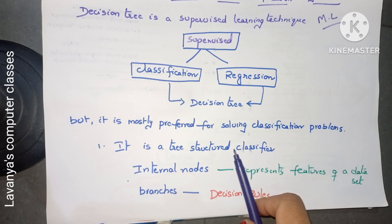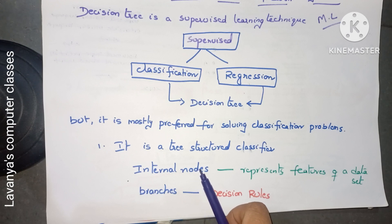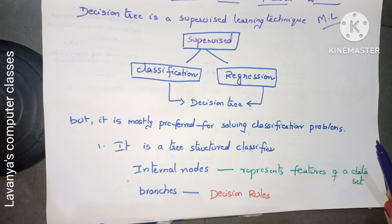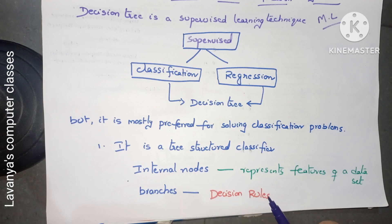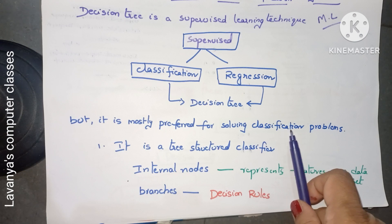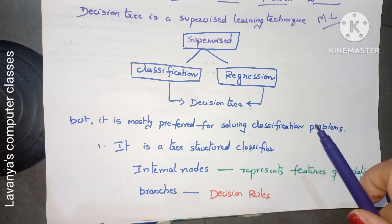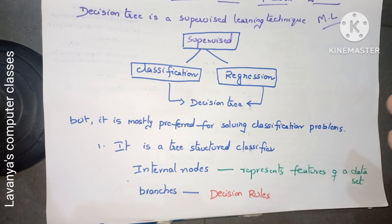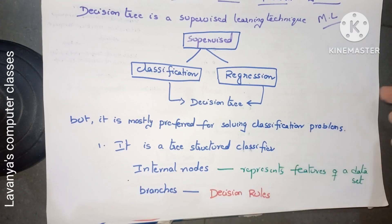It looks like a tree structure diagram. As we know from data structures, a tree is a combination of nodes. Here there are internal nodes and branches. Internal nodes represent features of a dataset — all the data is represented as internal nodes. Branches represent decision rules, because decision tree classifies data depending on decisions, and those decision rules are called branches.